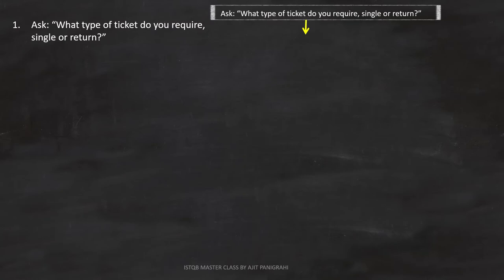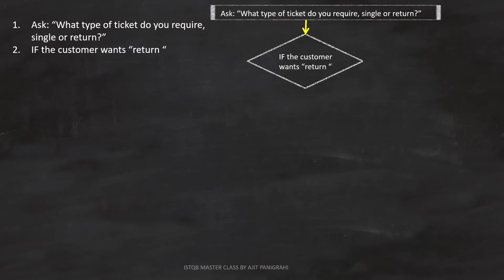Line number two is: if the customer wants return. This is a condition, and we can represent it like this in the flowchart. If this condition is true, line number three — ask what rate, standard or cheap day — will execute.